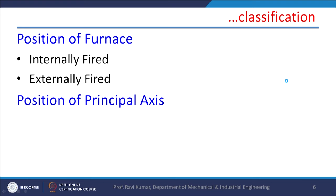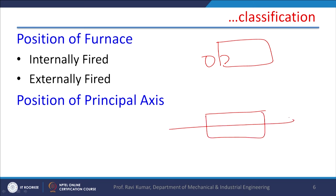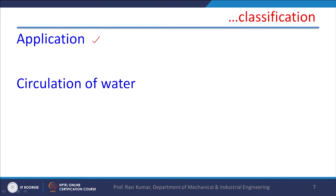Position of the furnace is another way of classifying boilers — whether the boiler is internally fired, meaning the furnace is housed inside the boiler, or it is outside the boiler. There can be a number of classifications: the position of the principal axis — whether the boiler is horizontal or vertical. Depending upon the application, some boilers are mobile like locomotive boilers, and some are stationary. Circulation of water is also a classification — whether it is natural circulation or forced circulation, with pumps required for forced circulation.